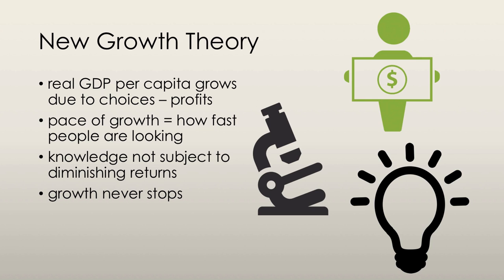Knowledge is a capital good that is not subject to diminishing returns. Knowledge not being subject to diminishing marginal returns results in the stock of knowledge increasing and the continual increases in productivity of labor and capital. New growth theory does not have any sort of growth-stopping mechanism — as physical capital accumulates, the real interest rate does fall, but the incentive to innovate and earn higher profits becomes stronger. So innovation occurs,